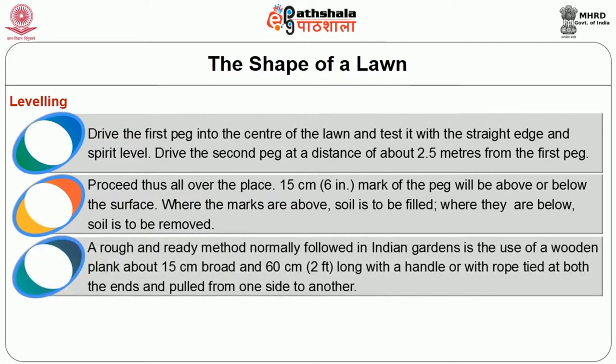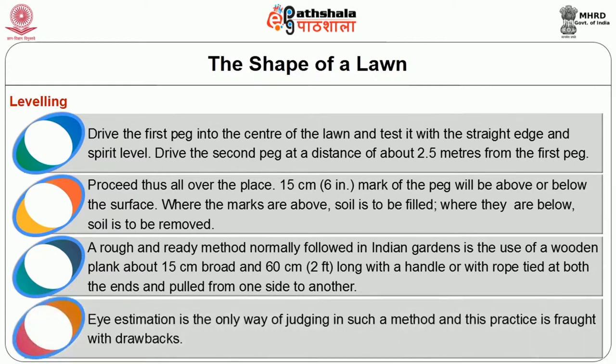A rough and ready method normally followed in Indian gardens is use of a wooden plank, about 15 cm broad and 60 cm long, with a handle or with a rope tied at both ends, and pulled from one side to another. High estimation is the only way of judging in such a method and this practice is fraught with drawbacks.